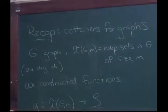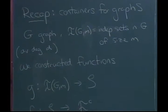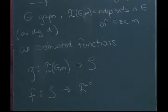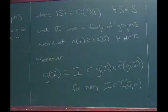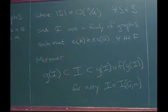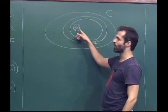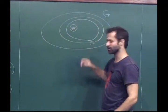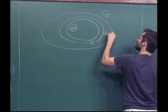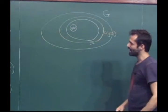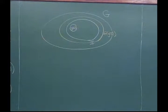We constructed a small set G(I) that's contained in I and has size at most a constant times N over D, such that there's a set F(G(I)) which contains I. Whether G(I) is contained in F or not doesn't really matter — it's F(G(I)).